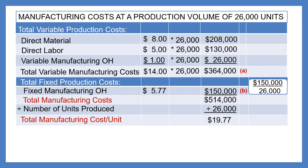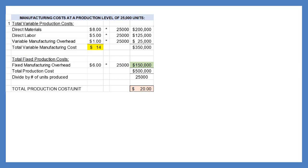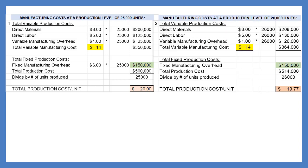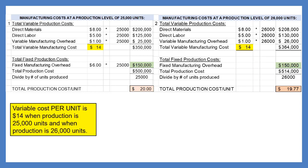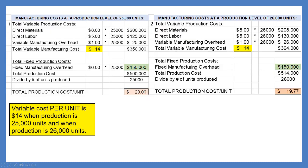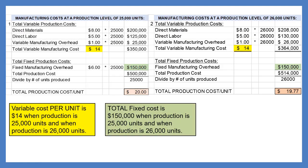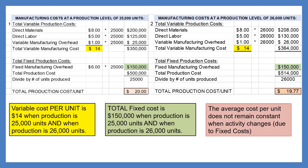This is the $14 per unit variable cost plus the $5.77 per unit fixed cost. To review, comparing 25,000 to 26,000 units: the variable cost per unit remains $14 at both levels; total fixed cost remains $150,000 at both levels; but the average cost per unit does not remain constant when activity changes — and that is due to the fixed costs.